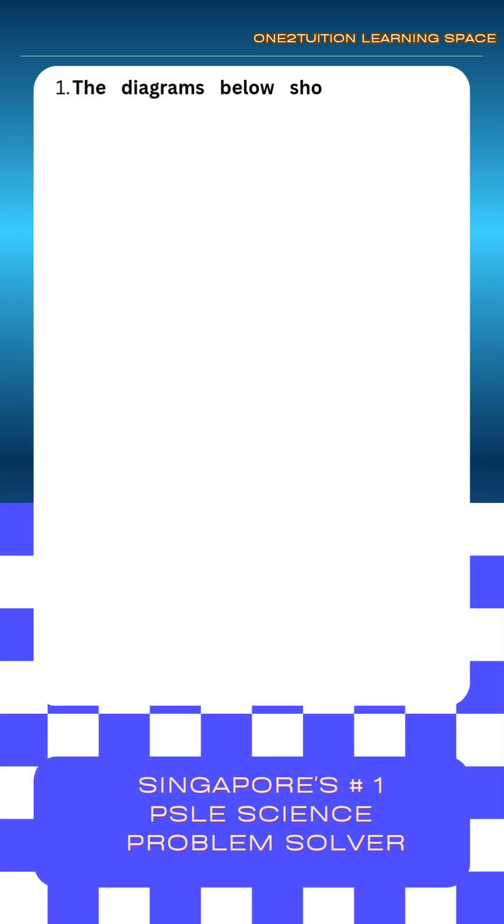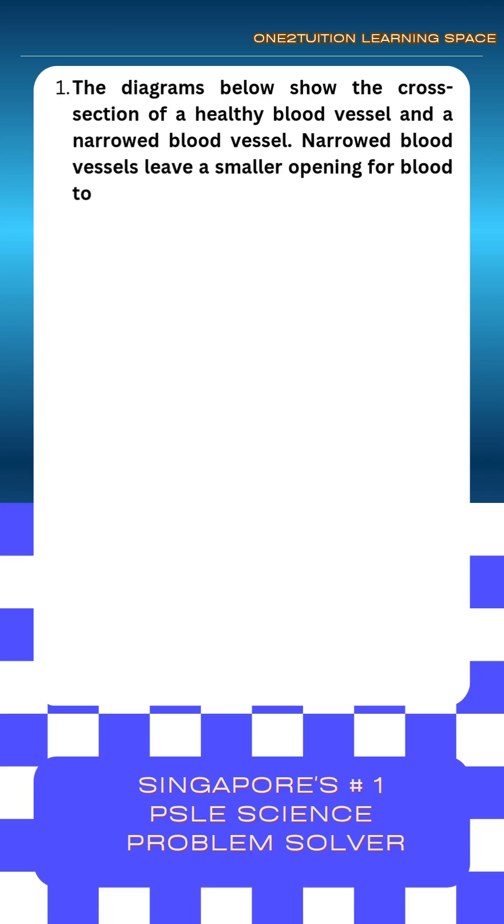The diagrams below show the cross-section of a healthy blood vessel and a narrowed blood vessel. Narrowed blood vessels leave a smaller opening for blood to flow through.